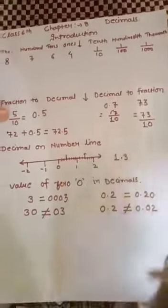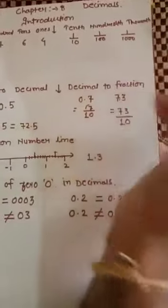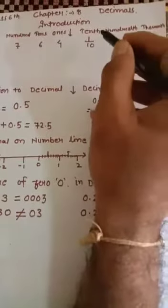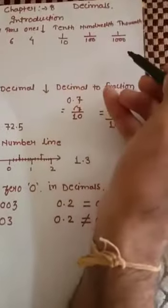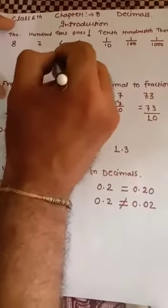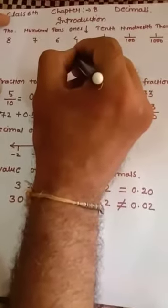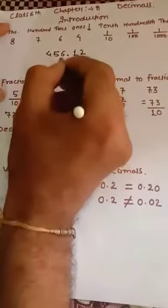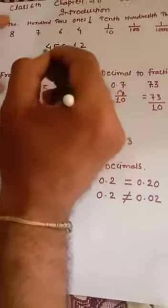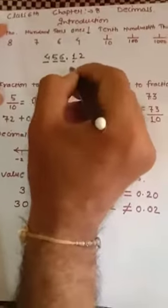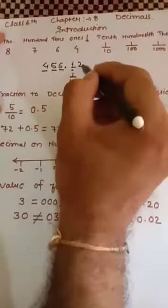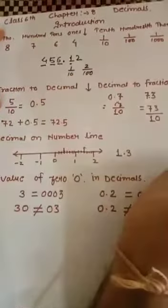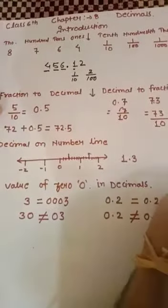What about the right-hand side? On the right-hand side we also have numbers — they are called decimals. For example, if I take a number like 456.12, the digits 4, 5, 6 have place values hundreds, tens, and ones. The digit 1 after the decimal point has place value one-tenth (1/10), and 2 has place value two-hundredths (2/100). So this gives us the place values for decimals.